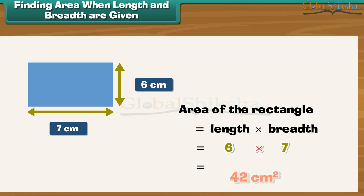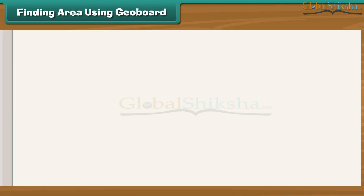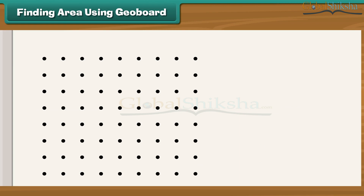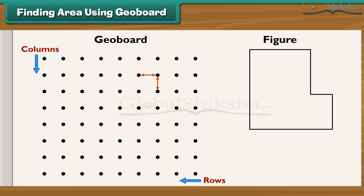Finding area using a geoboard: a geoboard is created by placing dots in rows and columns, where the distance between any two adjacent dots is the same. Let's learn to calculate the area of a given figure using a geoboard. First, draw five lines of lengths five centimeters, four centimeters, two centimeters, one centimeter, and one centimeter on paper as shown in the figure. The distance between any two adjacent dots is one centimeter.